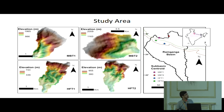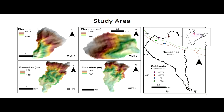This is our study area — the Ram Ganga basin in the northern part of India, in the Himalayas. We selected four sub-basins in this region. The names MBT-1, MBT-2, HFT-1, and HFT-2 don't mean anything in particular; they are just our own reference system.